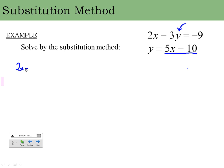In this first example, I substitute 5x minus 10 in place of y. So everywhere I had y in the top equation, I put 5x minus 10 in parentheses. Now I need to solve this for x — it's going to be a multi-step process. I start by distributing: 2x, then negative 3 times 5x is negative 15x, and negative 3 times negative 10 is plus 30.